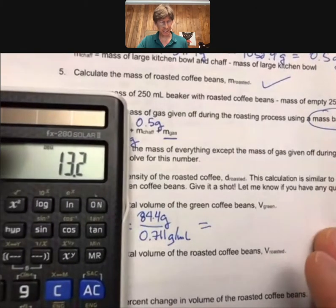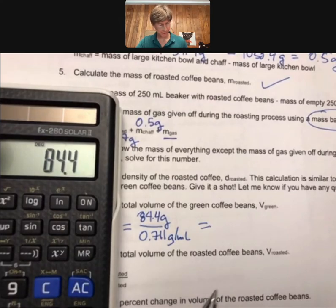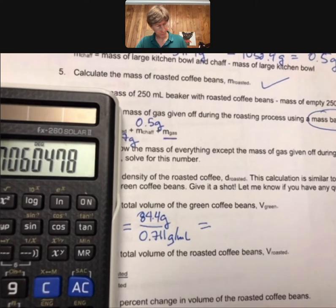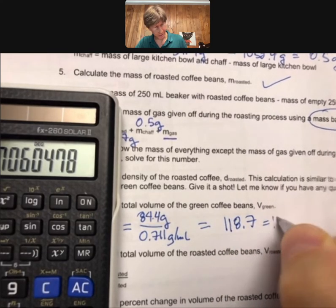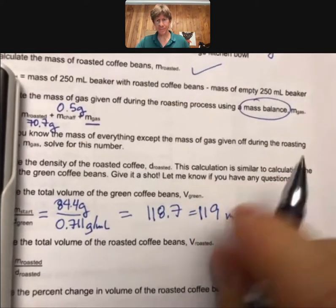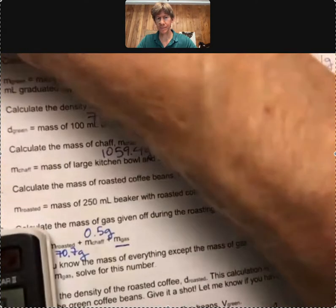Let's go ahead and multiply this out. We've got 84.4 divided by 0.711, 118.7, which will be 119 milliliters.